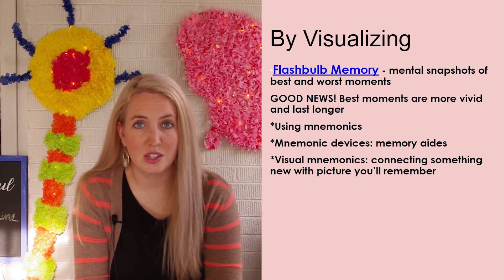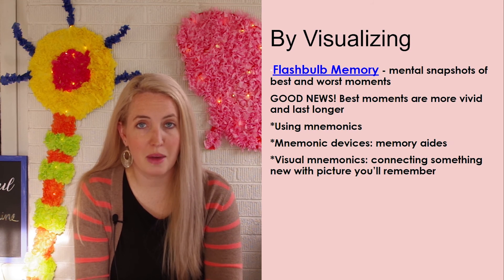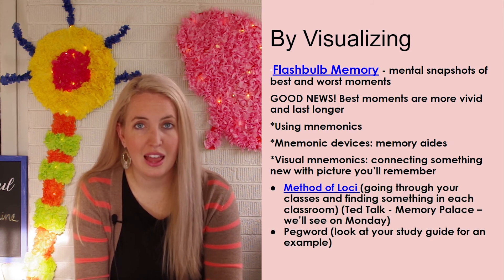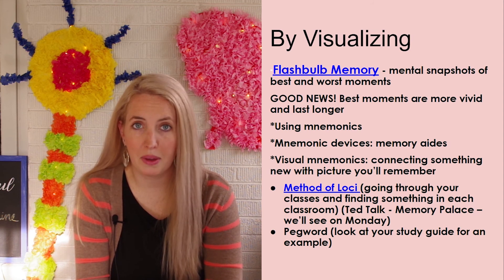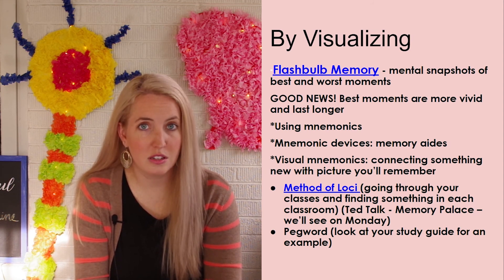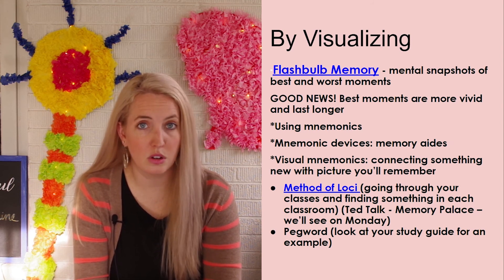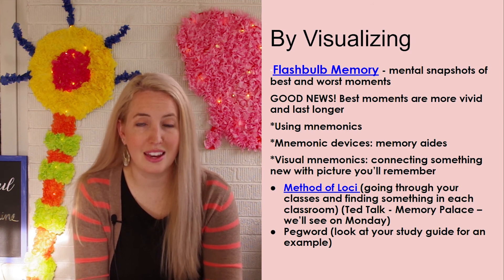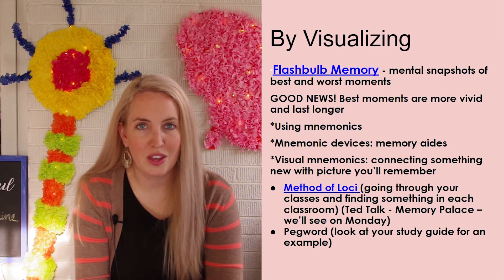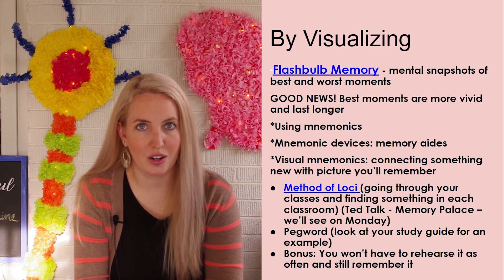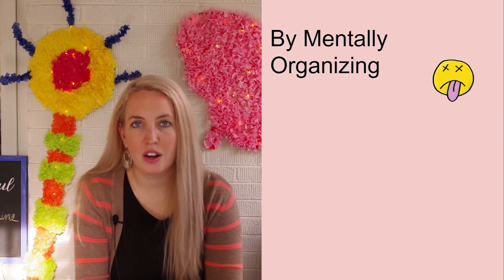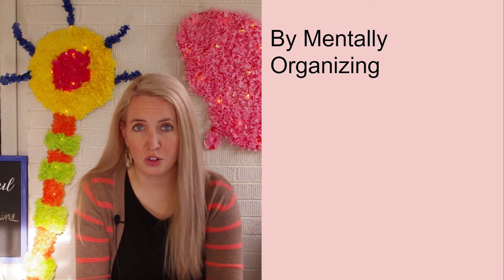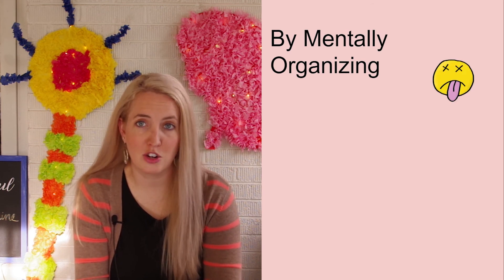There are other visual techniques we'll be using in class, such as the method of Loci and the pegword method. These are different ways that we can imagine items, topics, and people in different locations — either around our house or around the school — that help us remember certain items, particularly if we want to remember them in a specific order. The final way we encode is by mentally organizing, which is how we can put more information into both short-term and long-term memory.